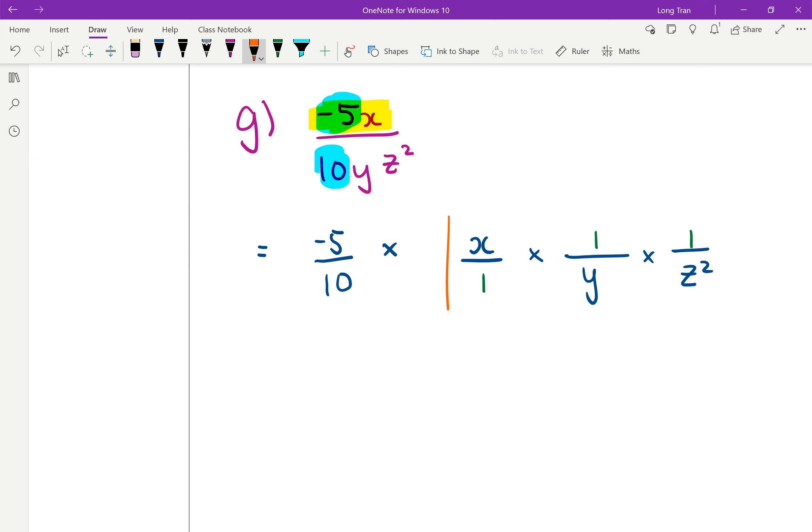You see in this fraction here, there's nothing to simplify, so I leave it as it is. Same thing with the last one. So it seems like there's not much to simplify in this fraction except for negative 5 over 10. What I'm looking for is to simplify by finding the highest common factor. So we first look at the number, 5 and 10, what's the common factor here? And we know that it's 5.